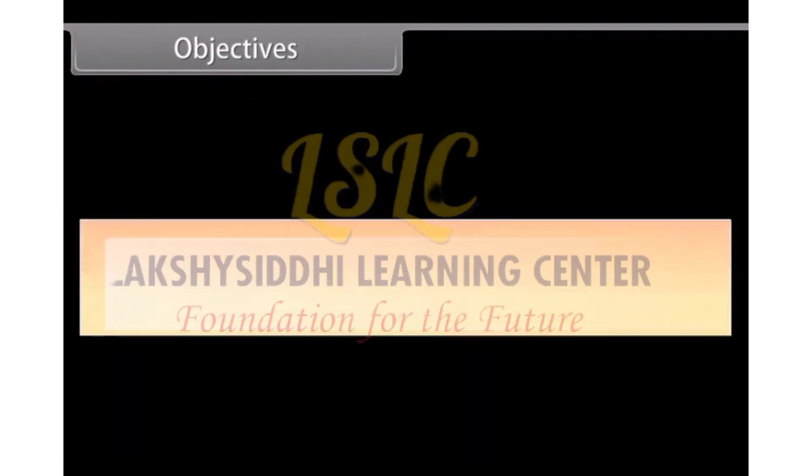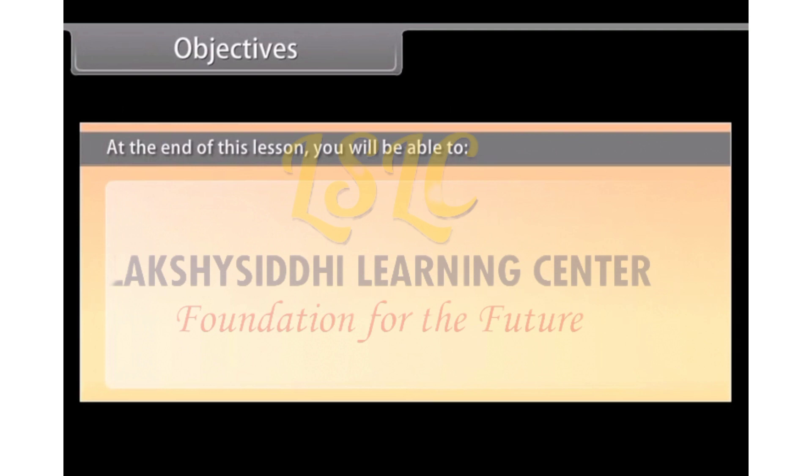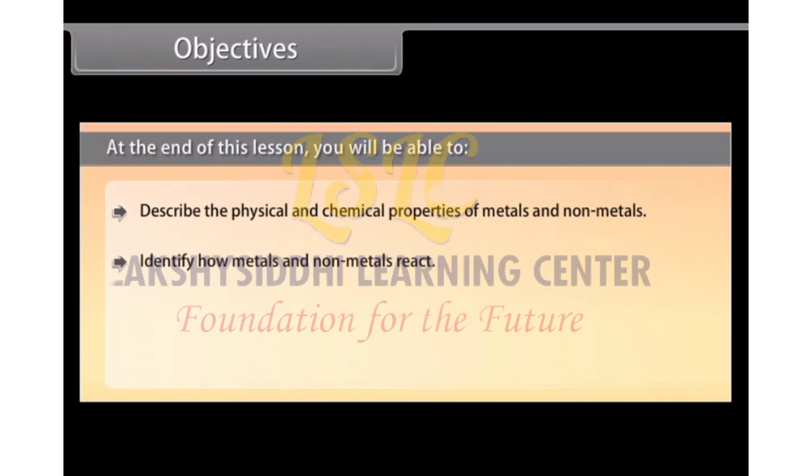Objectives. At the end of this lesson, you will be able to describe the physical and chemical properties of metals and non-metals, identify how metals and non-metals react, explain the occurrence of metals, and describe corrosion.